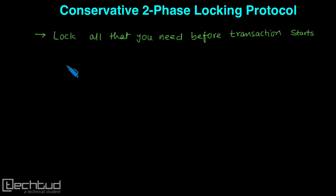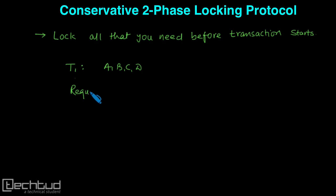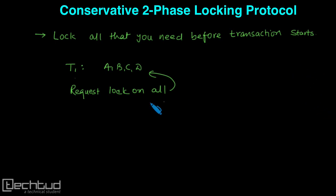So let's say if transaction T1 has to use data items A, B, C, D — it will request locks on all of A, B, C, D. If this lock is granted then the operations will be started, and if the lock is not granted then it will wait until the request is granted. The transaction operations will not start until then.